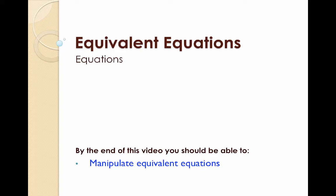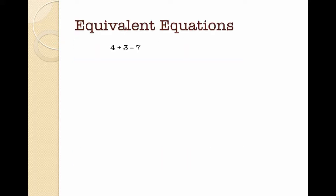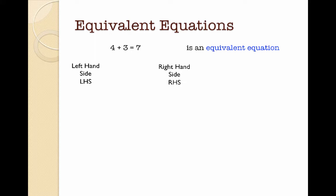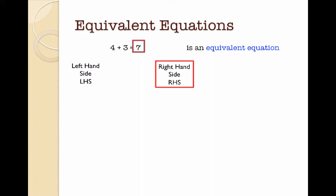Hi and welcome to the video on equivalent equations. By the end of this video you should be able to manipulate equivalent equations, and I'm going to show you what that means. Here I have an equivalent equation: 4 plus 3 equals 7. I'm going to be talking about the left hand side and the right hand side — LHS and RHS. The left hand side is anything to the left of the equal sign and the right hand side is anything to the right of the equal sign.